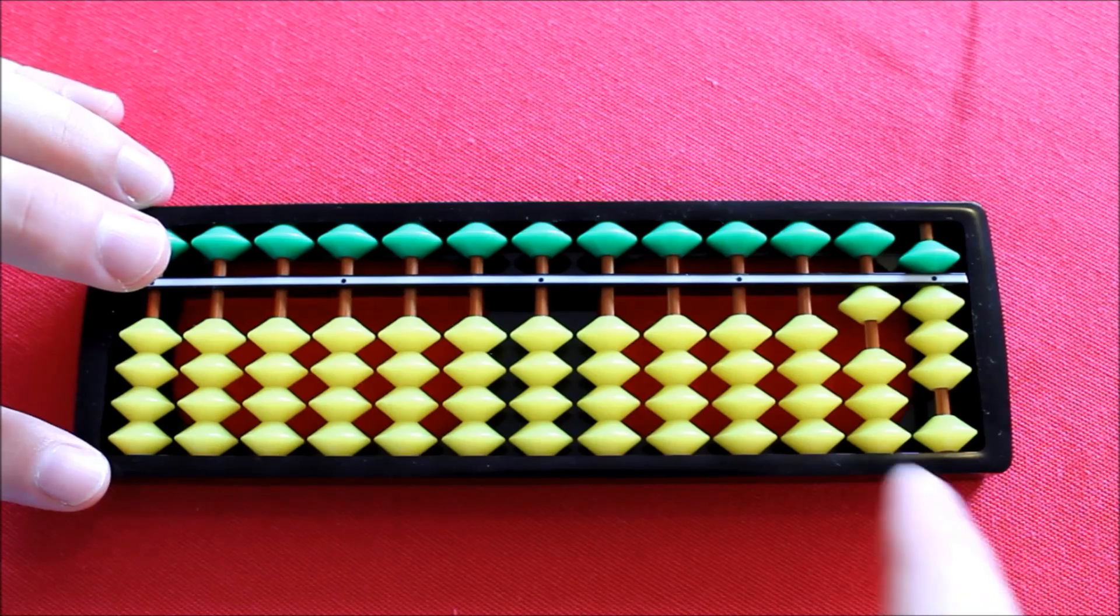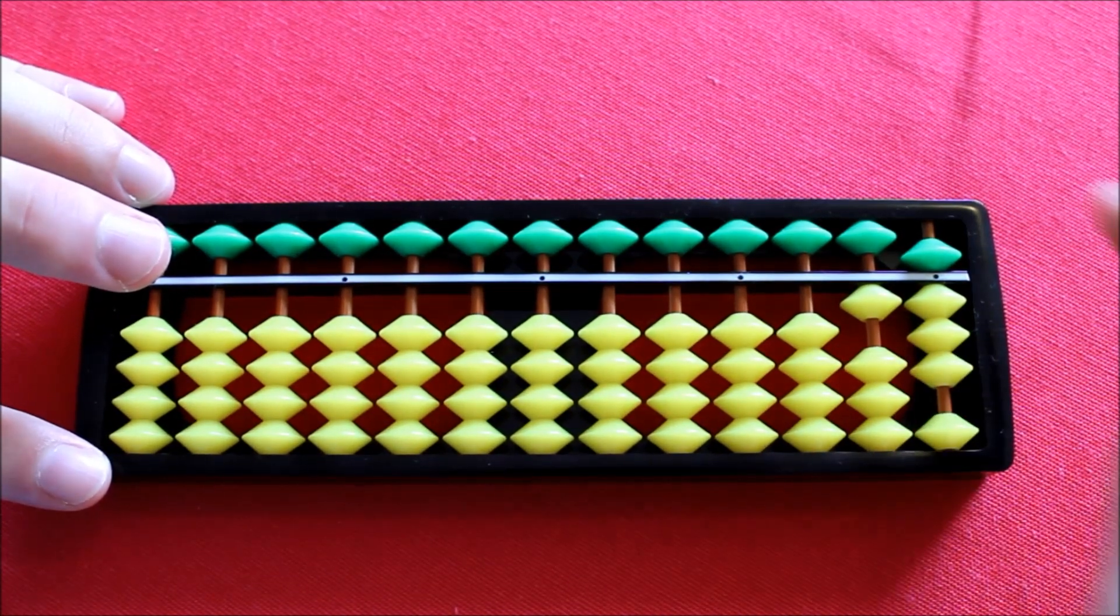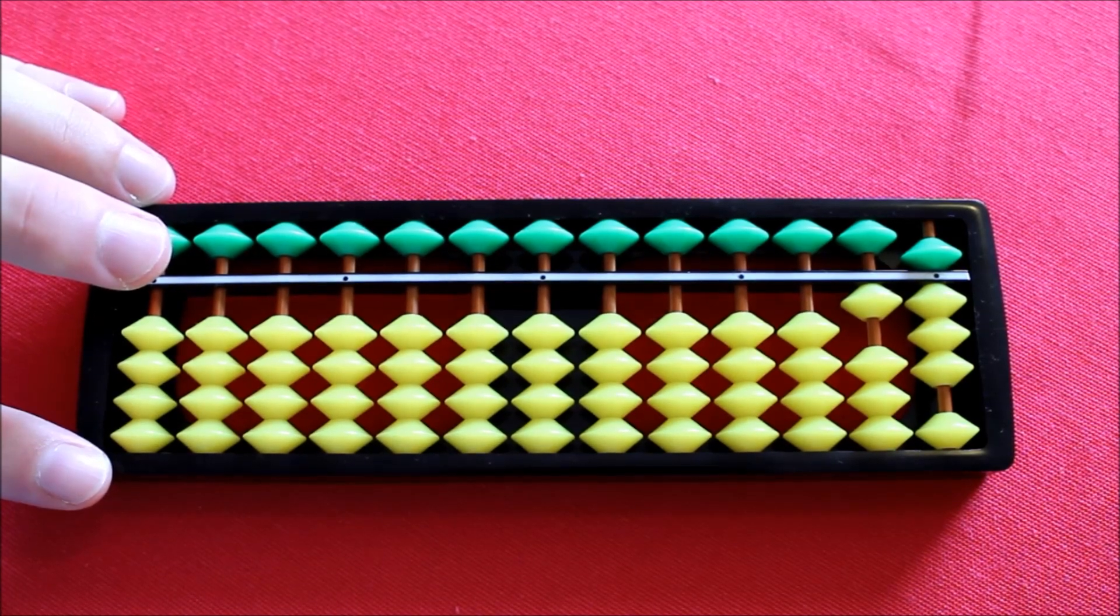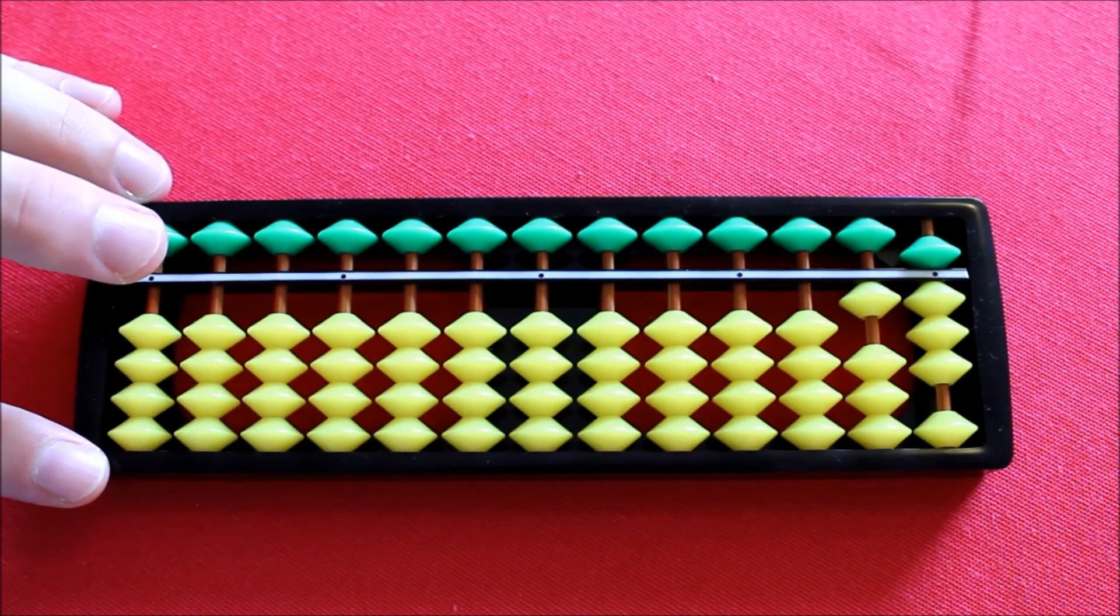And as for the sum, what have we got left? We've got a 1 in this column, 5 and 3 are 8 in this. And so we've got 18. And that's correct, because 9 plus 9 equals 18.